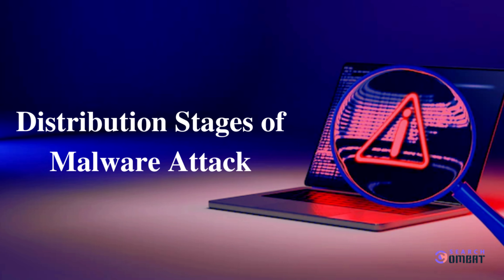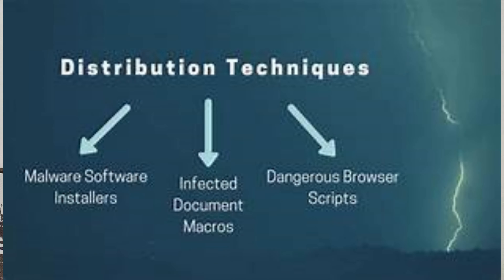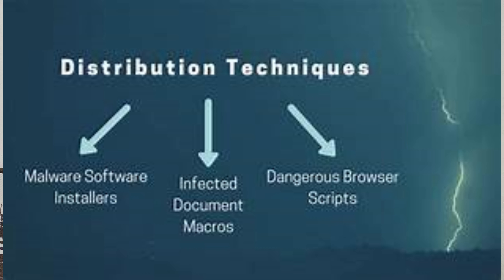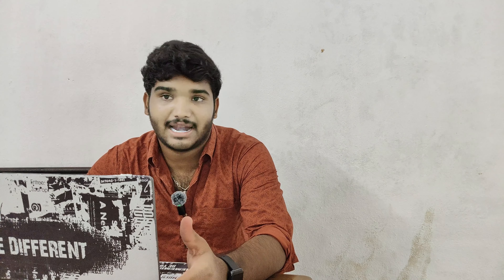Now we go with the distribution methods of malware. Malware can be distributed through various vectors including malicious email attachments, infected websites, software vulnerabilities, removable media and social engineering tactics. Drive-by downloads, exploit kits, phishing emails and malicious advertisements are commonly used methods by attackers to distribute malware.